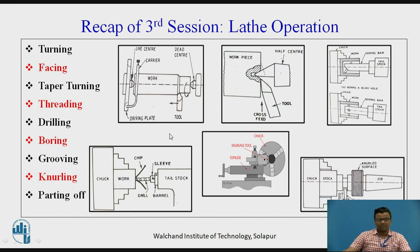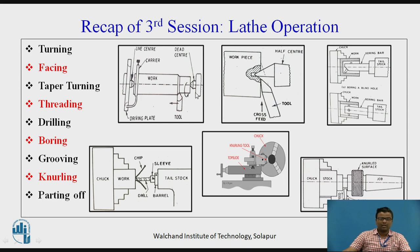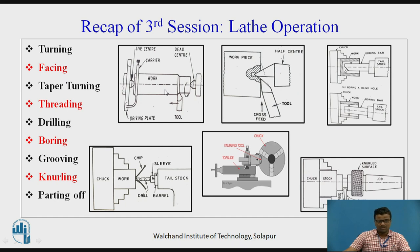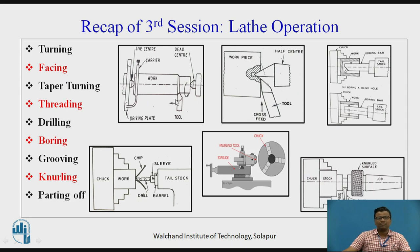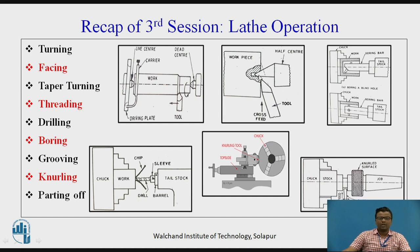You can see the different figures here. This is the figure of facing where the tool is having motion parallel to the axis of rotation. Whenever there is relative motion between the tool and the workpiece, there will be a cutting operation and the diameter will be reduced. In the facing operation, the tool moves perpendicular to the axis of rotation, and the length will be reduced.